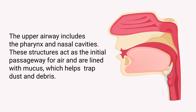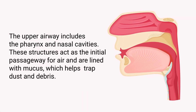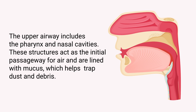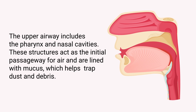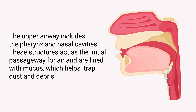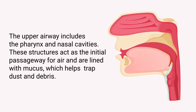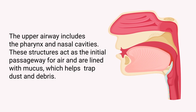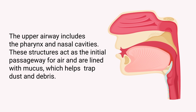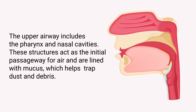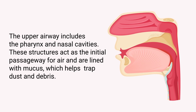The upper airway includes the pharynx and nasal cavities. These structures act as the initial passageway for air and are lined with mucus, which helps trap dust and debris.